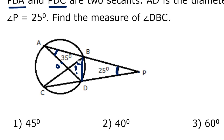Now, if you look at the bigger triangle BCP, you know P is 25 and angle C is 35. So 35 plus 25 is 60. Out of 180, if these two angles total 60, angle B has to be 120. If this angle is 120, then the other side of this angle will be 60 because it is a straight angle — 180 degrees. So angle ABC comes out to be 60 degrees.